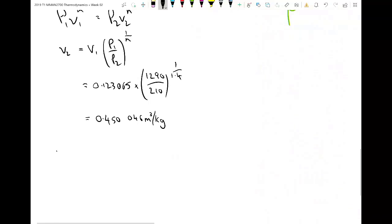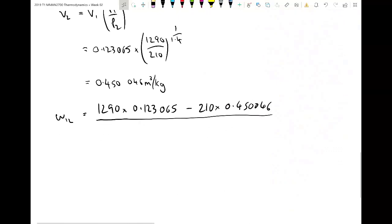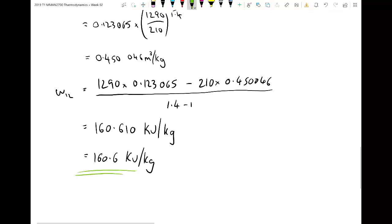And we can just say work 1, 2 equals 1290 times 0.123065, minus 210 times 0.450065 divided by 0.4. Cool! That's an equation with numbers in it. So we can answer that. When I tapped it into my quiz it told me I was right so that made me feel good.